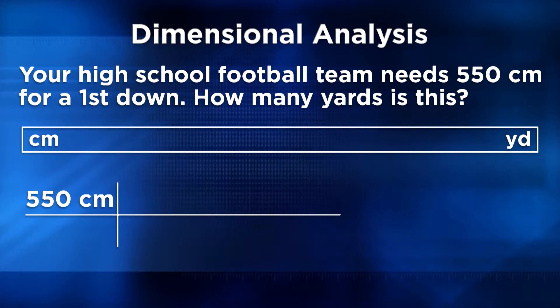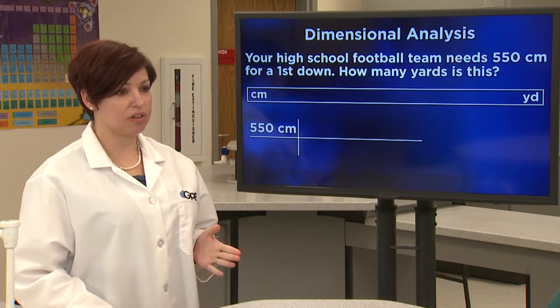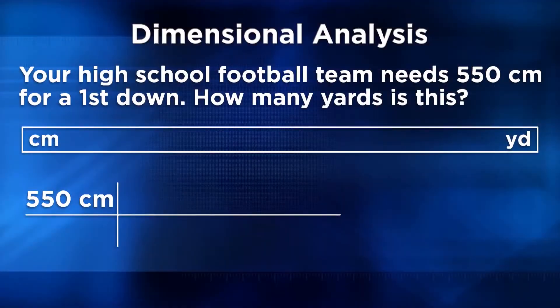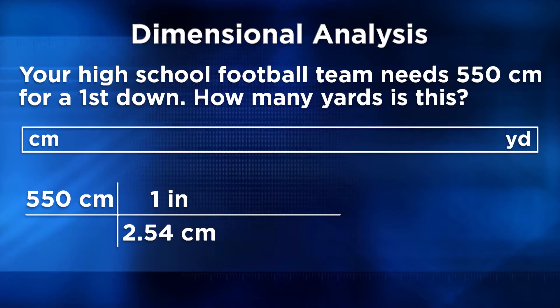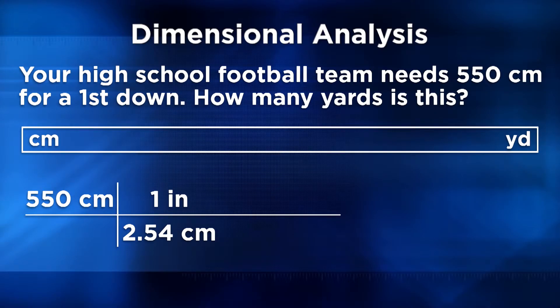The next step is to choose a conversion factor. We have centimeters and eventually need to get to yards. We put centimeters on the bottom right and use the equivalent statement that one inch equals 2.54 centimeters as a conversion factor. That converts our distance to inches. We bring centimeters down to the denominator because the units guide the conversion. We need to convert from metric units to English units, and that conversion factor does it.